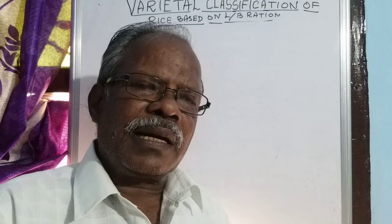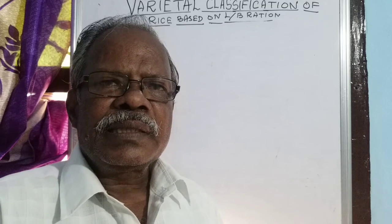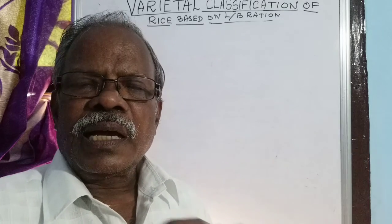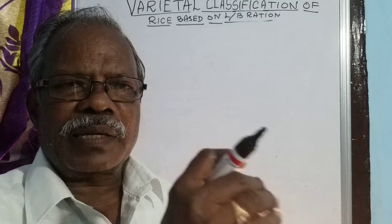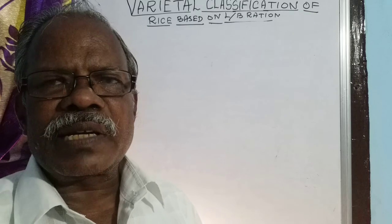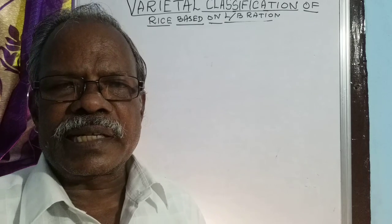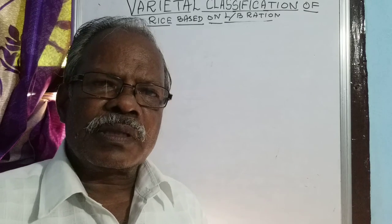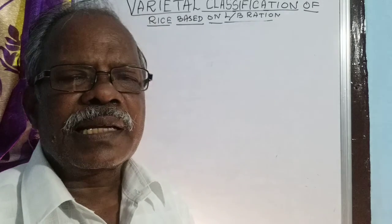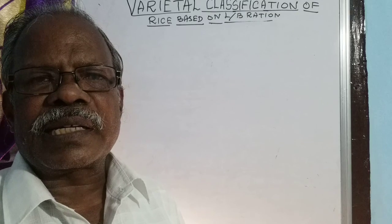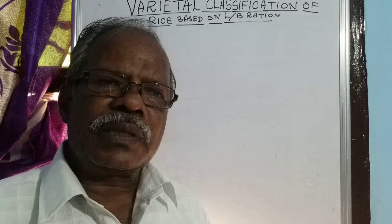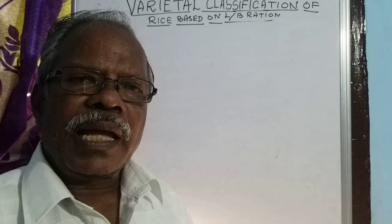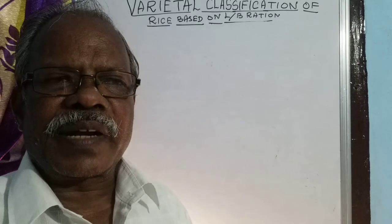These varieties are named based on the research center where they were released. For example, ADT means Aduthurai Paddy Research Center. CO refers to varieties released from the Coimbatore Agriculture Research Center and Agriculture College. Similarly, Thirur Kuppam released varieties called TKMRT.